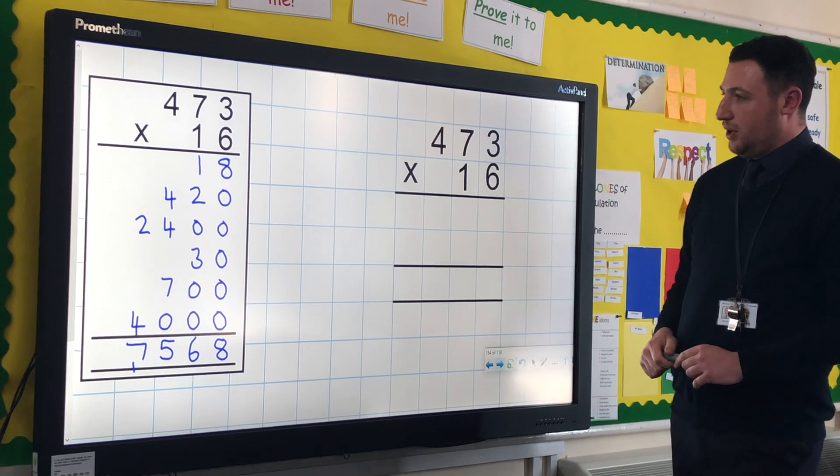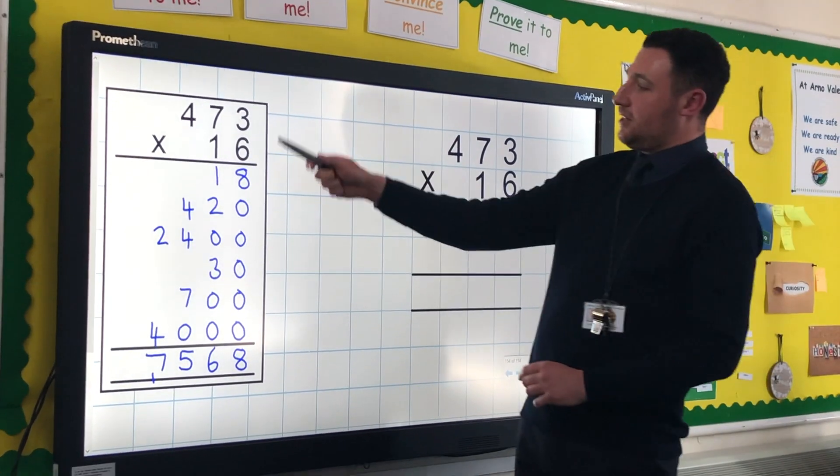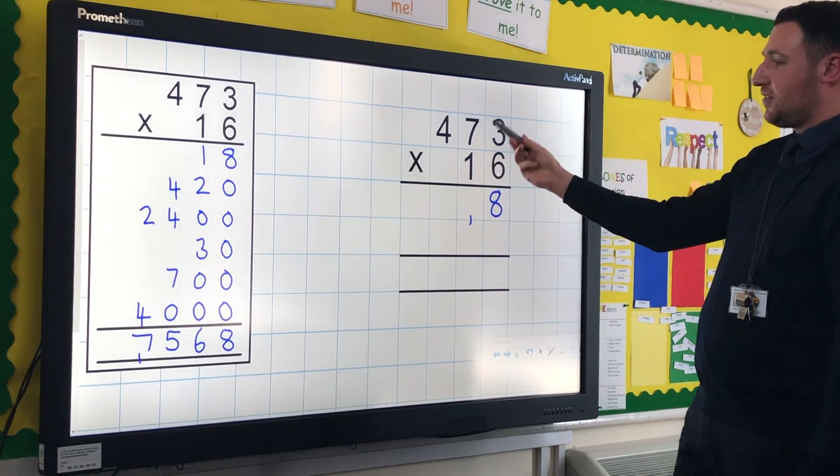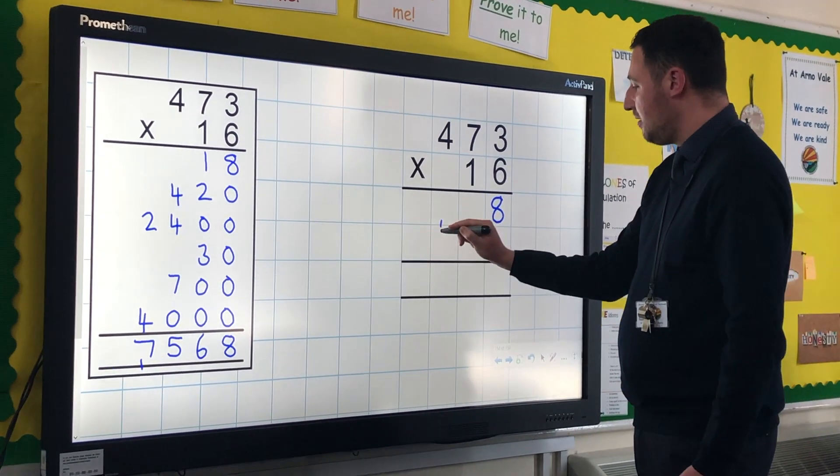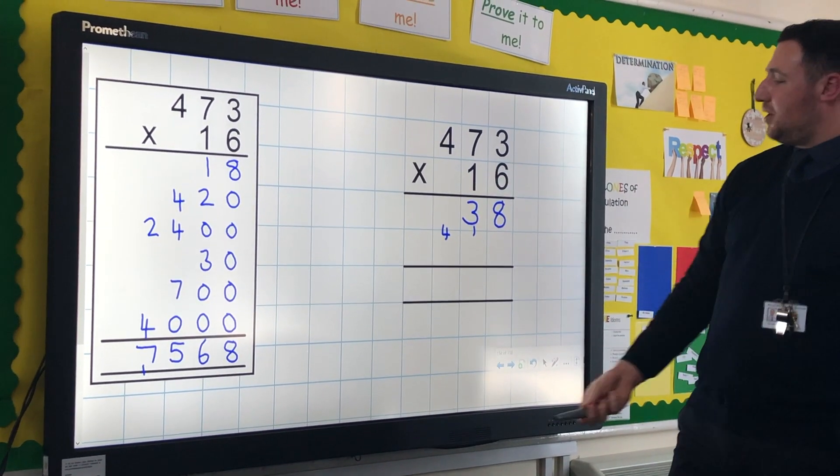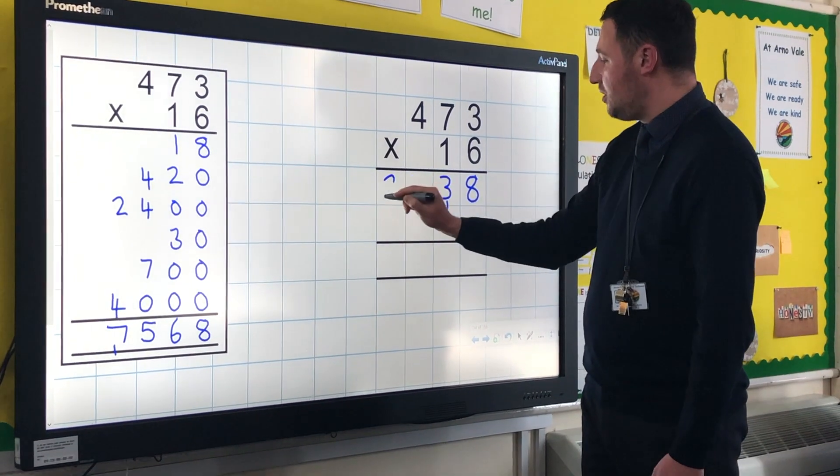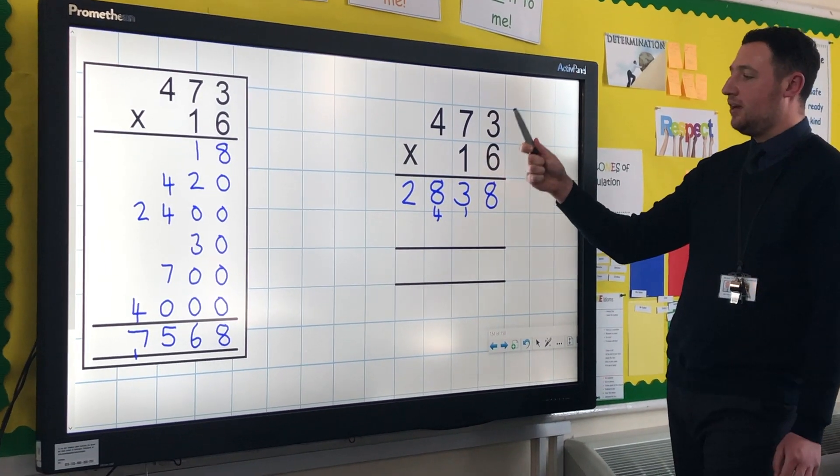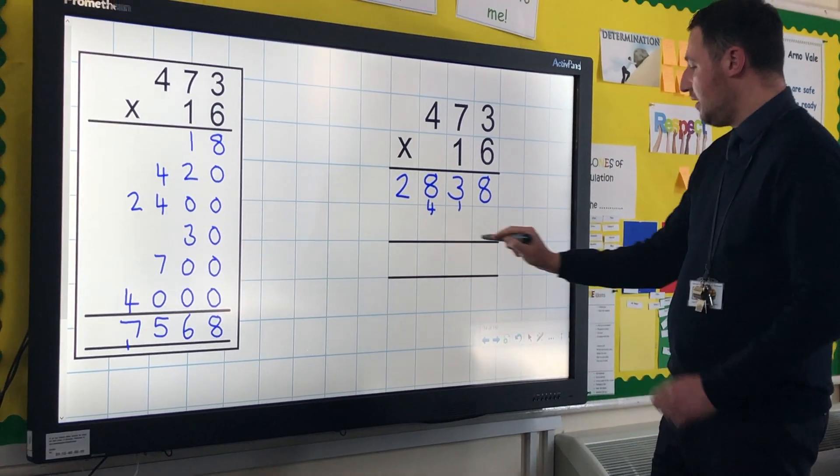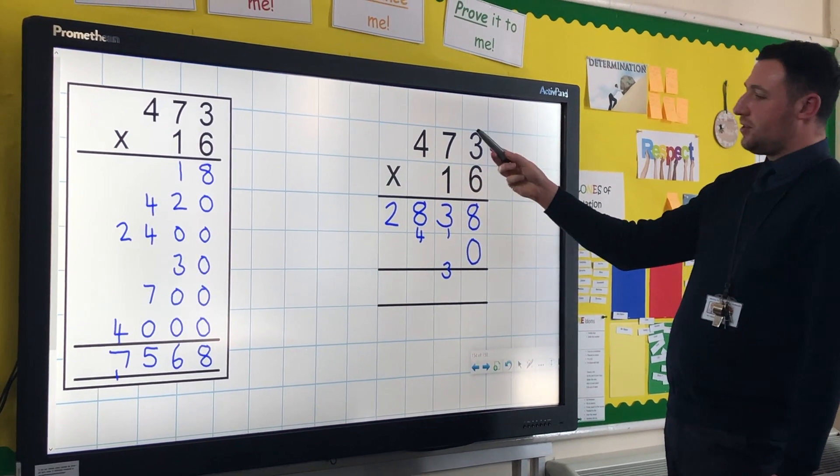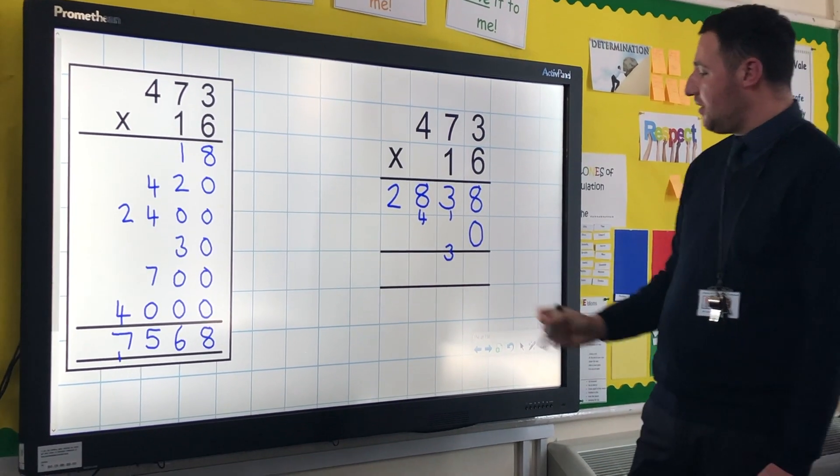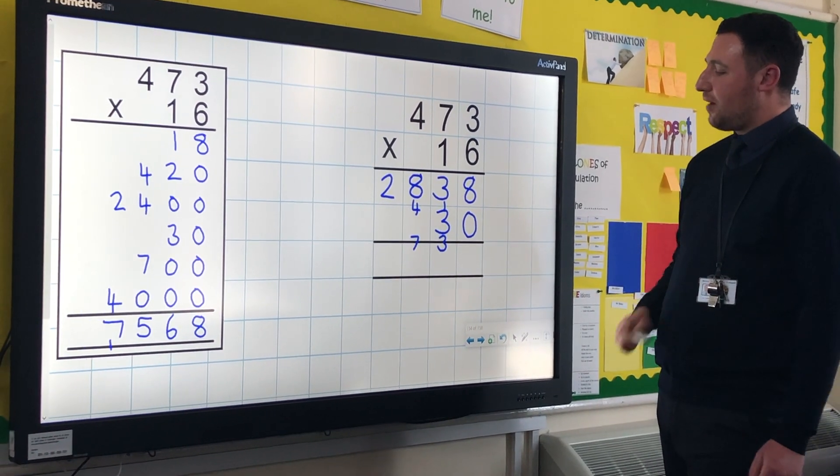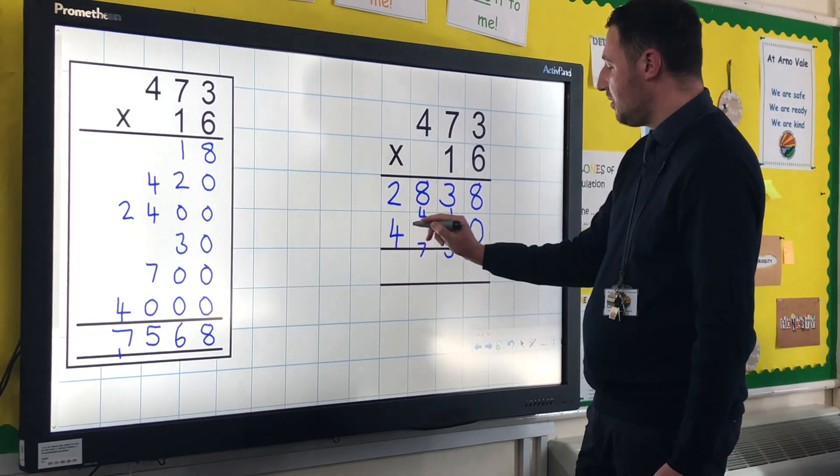So a harder example, we'll do a harder example together. Six lots of three is 18, we're going to do one ten and eight units. Six lots of 70 is 420, add on the 10 is 430. Six lots of 400 is 2400, add on that 400 is 2800. We don't just put a zero. The reason for that is that we're doing 10 lots of three, not one lot of three. 10 lots of three is 30. 10 lots of 70 is 700, add on that 30 will be 730. 10 lots of 400 is 4000, add on the 700 is 4700.